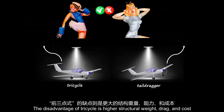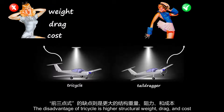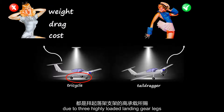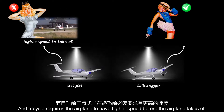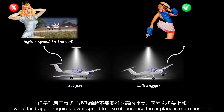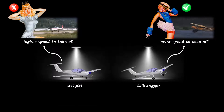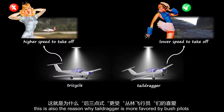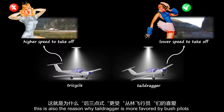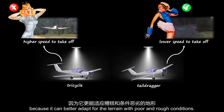The disadvantage of the tricycle is higher structural weight, drag, and cost due to three highly loaded landing gear legs. The tricycle also requires the airplane to reach a higher speed before takeoff, while the tail dragger requires lower speed to take off because the airplane is more nose-up. This is also the reason why the tail dragger is more favored by bush pilots — it can better adapt to terrain with poor and rough conditions.